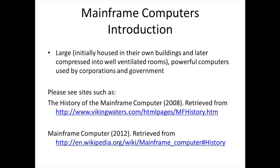The idea of mainframes as large computers arose early in the history of computers, as the mechanical and electrical components were large and expensive and consumed a large amount of electricity to power the device. Reports about the lights of Philadelphia dimming when ENIAC was first turned on are easy to find. Initially, mainframes consisted of one central processing unit — a CPU — with various peripherals.